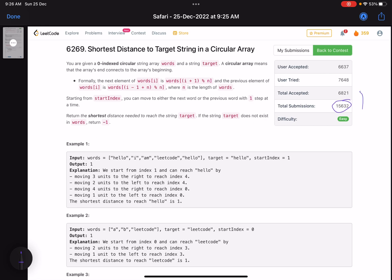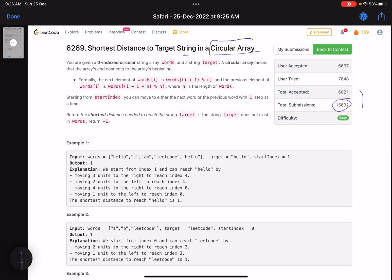Let's see what the problem is trying to say and why the accuracy is so low. The problem name is shortest distance to target string in a circular array. The circular array itself tells us that the last element and the first element of the array are connected. Let's see what the problem is saying.